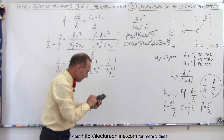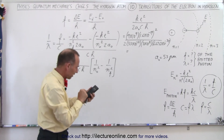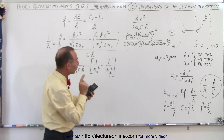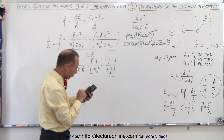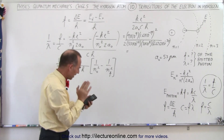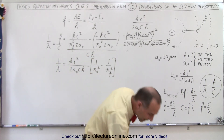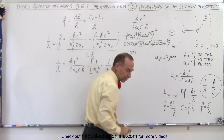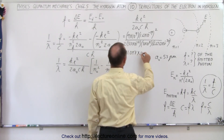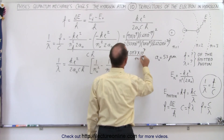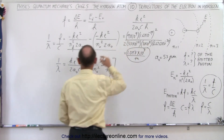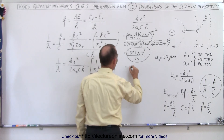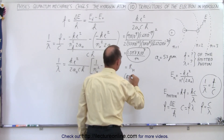Using the calculator we get — making sure to square the charge — 1.097, and if we get rid of the rounding error, this is 1.097 times 10 to the seventh per meter. Looking up the units, this will be per meters. This quantity is known as the Rydberg constant, equal to R sub H.